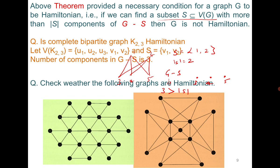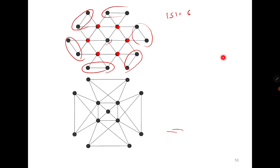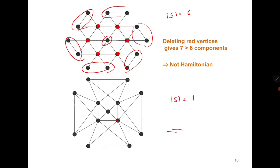Let us quickly check whether the following graphs are Hamiltonian — please try to use the above result. For the first one, consider the inner ring with 6 vertices. If you delete these 6 vertices, the cardinality of S is 6. After deletion, you will see 7 components, which is more than the cardinality of S, so the graph is not Hamiltonian. Similarly, in the second case, you can choose S with cardinality 4, and after deletion the remaining graph has 5 components, so again it is not Hamiltonian.